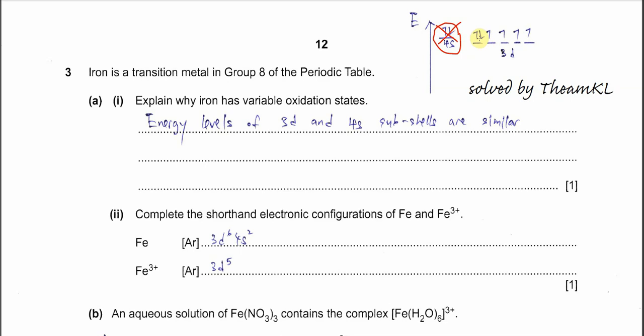Once the two 4S electrons are removed, the 3D electrons follow. Because the energy difference is very small, releasing another electron from 3D is also relatively easy. That is why iron can form different oxidation states. It can continue to form higher oxidation states, but those require extra energy.